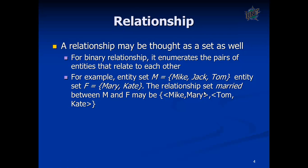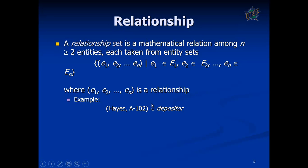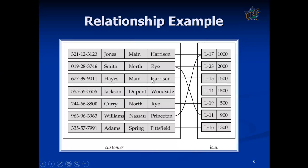A relationship can be thought of as an association between different components. For example, entity set M — Mike, Jake, Tom — and entity set F — Mary, Kate. The relationship set 'married' between M and F will be Mike-Mary, Tom-Kate, etc. The relationship is represented by a mathematical relation among two or more entities.